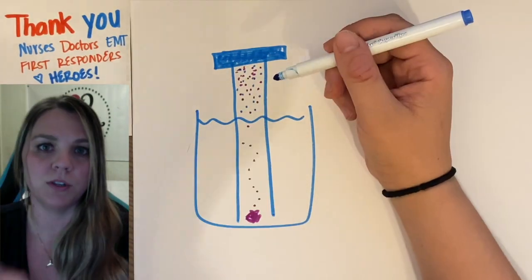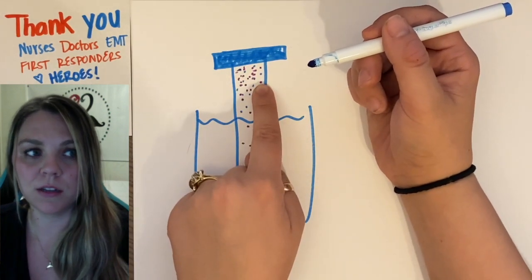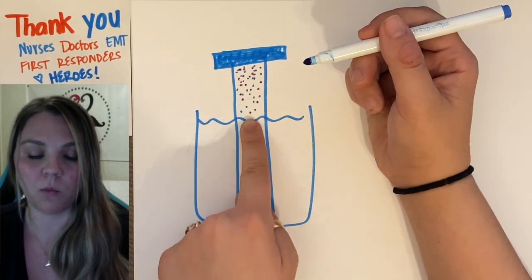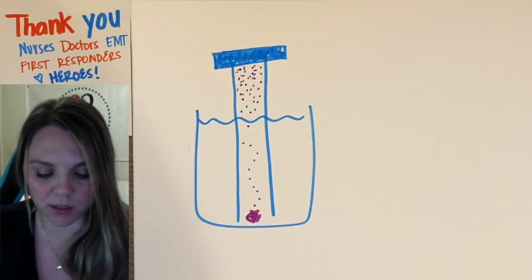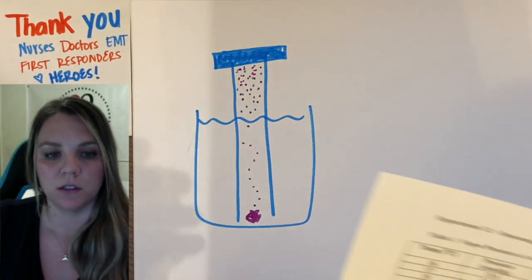When we took our measurement from the barometer, that would have been the total pressure. So I need to figure out the partial pressure. I need to subtract out my water vapor pressure that's in there.